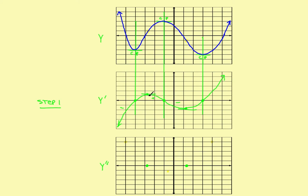That divides things up into three intervals: from here to here, another from here to here, and a third from here to here. In the first interval, the green graph has a positive slope, so the second derivative is above the x-axis — positive. In the next interval, the slope of the green graph is negative, so it drops below the x-axis — negative. In the last interval, the slope of the derivative graph was positive, so it goes back above the axis. That's step two — and you end up with a graph of the second derivative.